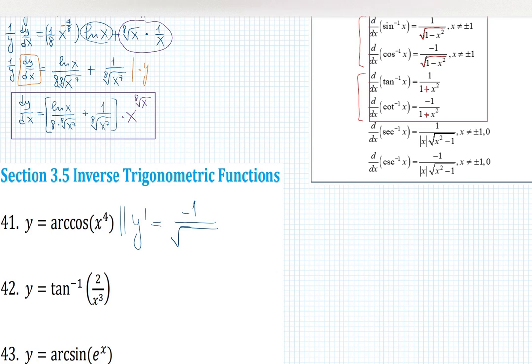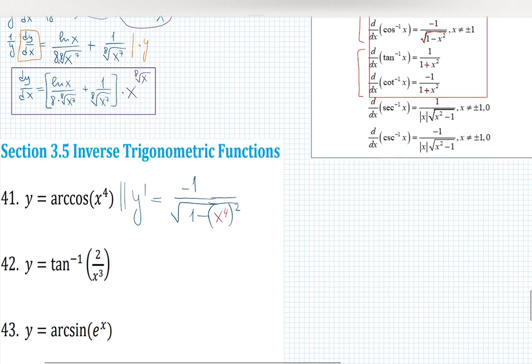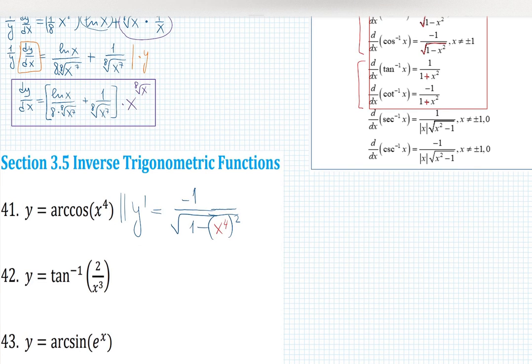What is my input? x to the 4. So it becomes 1 minus x to the 4 squared. This is the most important part here not to forget about input squared. Then don't forget chain rule. I'm looking at the function inside and need to differentiate this function. Derivative of that function is 4x cubed.